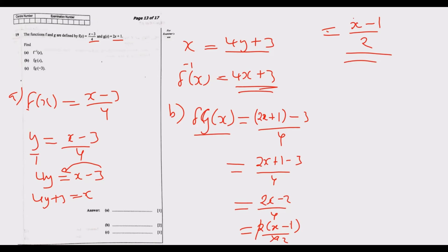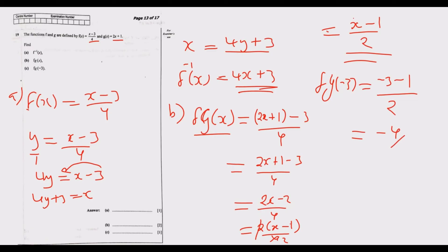We are then asked to find f of g of negative 3. Substituting x equals negative 3 into (x minus 1) over 2 gives (negative 3 minus 1) over 2, which is negative 4 over 2, equaling negative 2. So f of g of negative 3 equals negative 2. That's how you answer Question 19 to get all 4 marks.